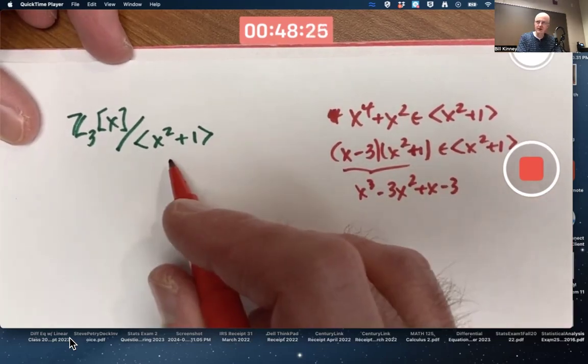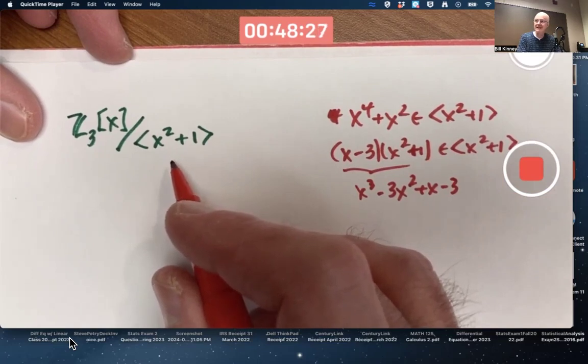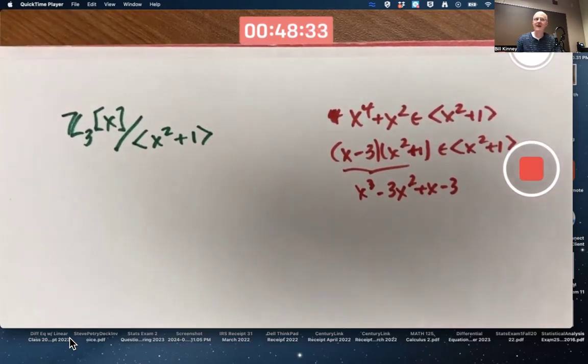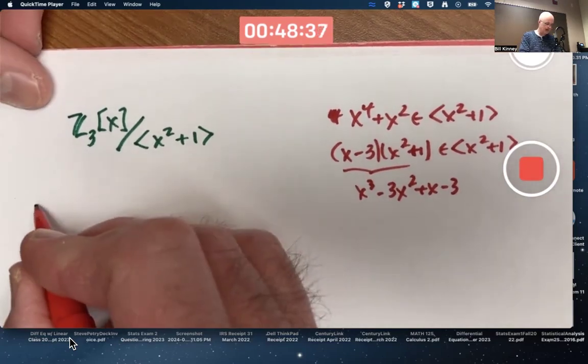So this is a principal ideal generated by x squared plus 1. It's definitely an ideal. As we've seen today, you can definitely make the factor ring. What is this factor ring like? That's the question.